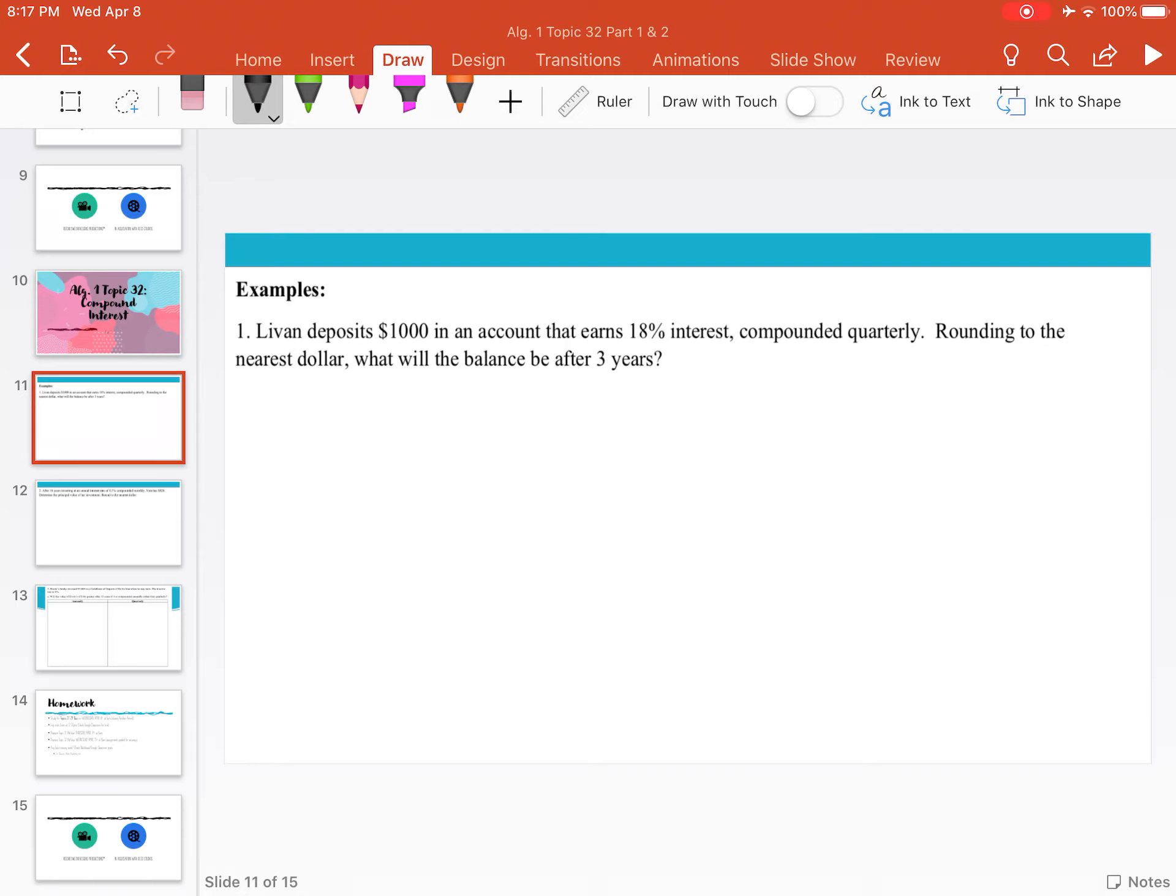Right off the bat, I'm going to start with my formula. We know the formula is A equals P times 1 plus r divided by n to the nt power. Normally in word problems, I like to start off with CUBES: circling the number, underlining the question, boxing any important words.